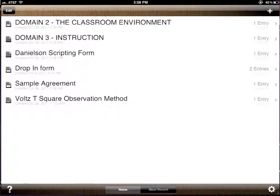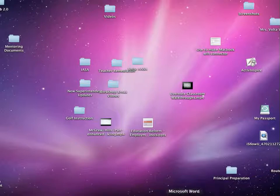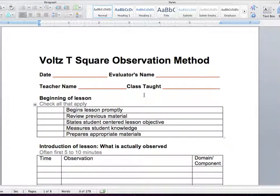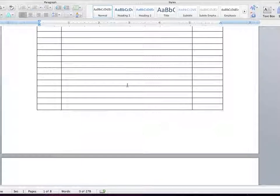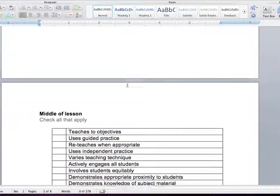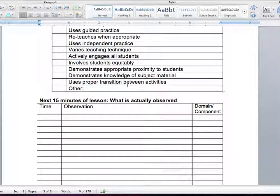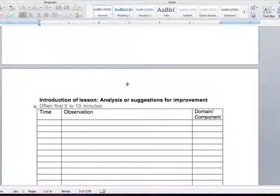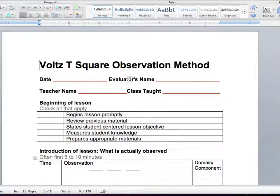The first thing you're going to need to do is get a file. I'm putting up a file that I call the Voltz T-Square Observation Method. You can make this file in Word or Pages, and this is a file that we're going to want to make into our Form Tool. This is an example of a form that you might want to use if you were doing observation of a teacher in a classroom.